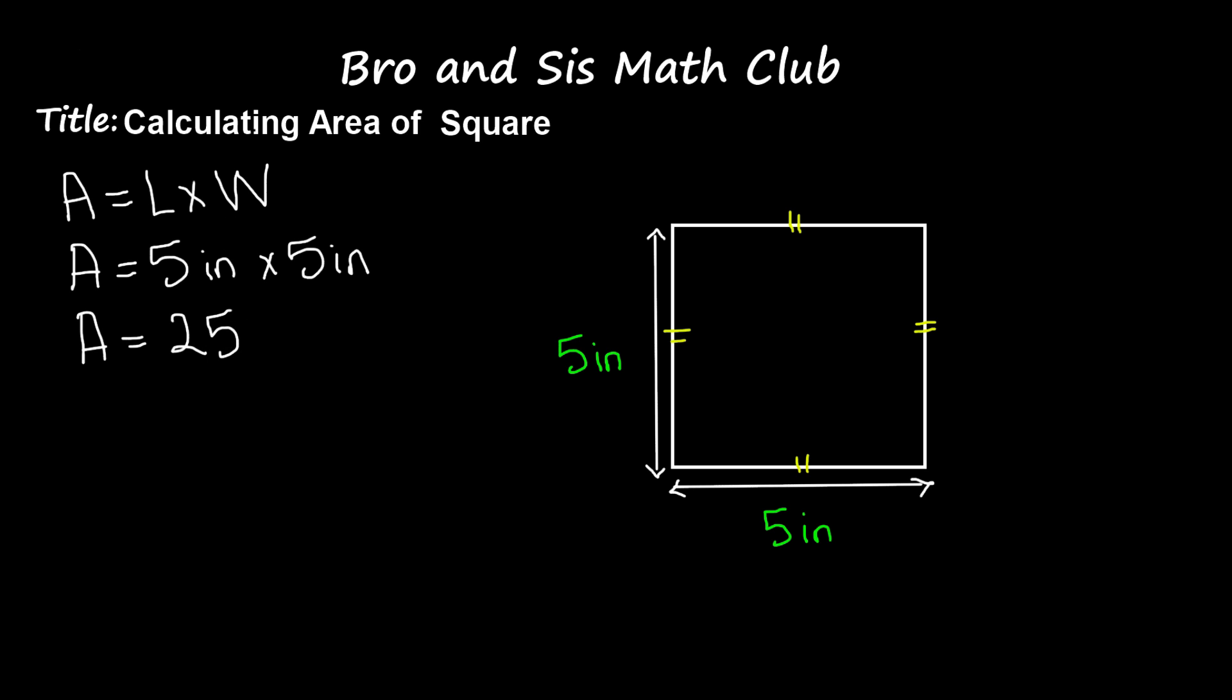And since we are multiplying inch by inch, we have to write square inch. Or, we can write it as 25 inches to the second power, because we are multiplying inch by inch—so inch to the second power.